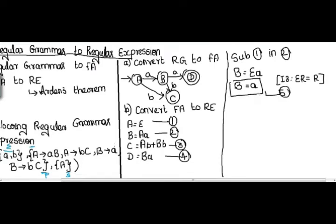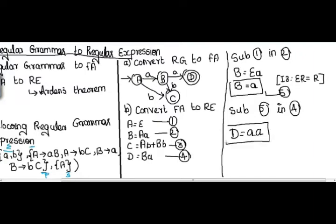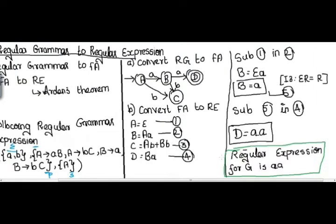I don't need to substitute into C because I get the answer directly from D. Substituting into equation 4: D = Ba, and since B = a, D = aa. So the regular expression for this grammar is aa. In this example I solved it without using Arden's theorem directly. In my previous videos I have given examples where Arden's theorem is used — you can watch those videos linked in the description. This is how we convert regular grammar to regular expression.